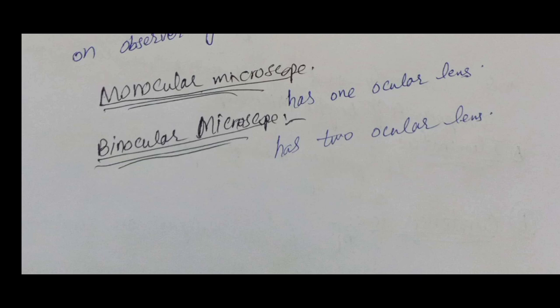We also categorize the microscope on the basis of the number of ocular lenses. If the microscope has one ocular lens, it is known as a monocular microscope. If it has two ocular lenses, it is known as a binocular microscope.